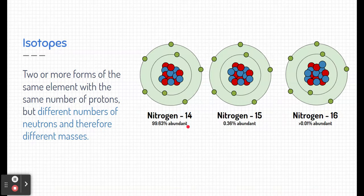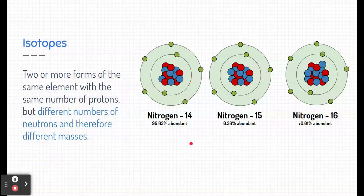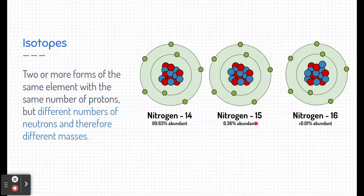Nitrogen-14, this isotope of nitrogen is 99.63% abundant. We see a lot of nitrogen-14 in the universe. Nitrogen-15, not so much. We only see about 0.36% of nitrogen-15. It does exist, just not a lot.